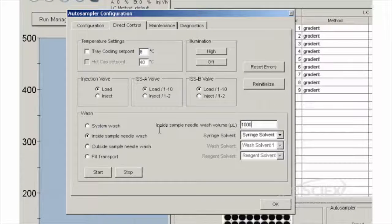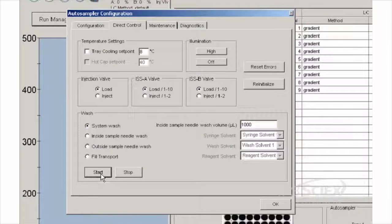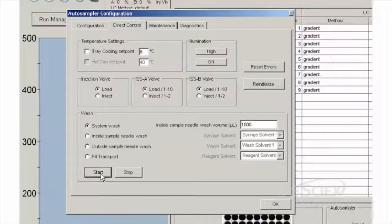Perform a system wash of a thousand microliters. After clicking Start, wait until the Auto Sampler is idle, then click OK to close the configuration window.